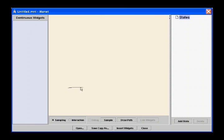Monet is a tool for prototyping continuous interactions by demonstration. Here we will illustrate this tool by several examples.